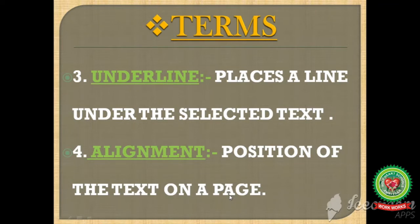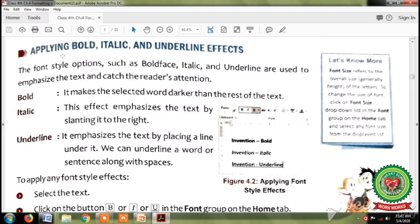So now open page number 37. Our first topic is applying bold, italic and underline effects. The font style options such as bold face, italic and underline are used to emphasize the text and catch the reader's attention. Emphasize means to give special importance to the text. You can see figure 4.2 where the word 'invention' is written using three formatting effects: bold, italic and underline.